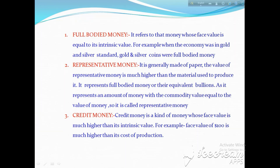Since it represents high amounts of money, it is called representative money. The third one is credit money. Credit money is a kind of money whose face value is much higher than its intrinsic value. It is a kind of representative money, but it is not actually representative money. For example, the face value of a $100 note is much higher than its cost of production — a $100 note is just a piece of paper, but it represents the value equal to $100.